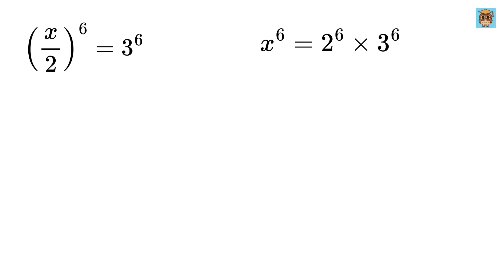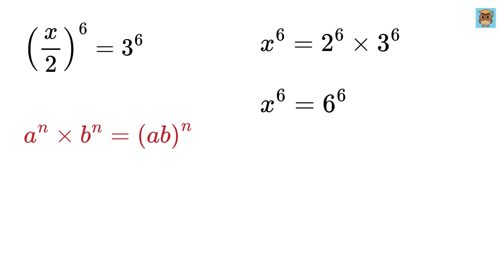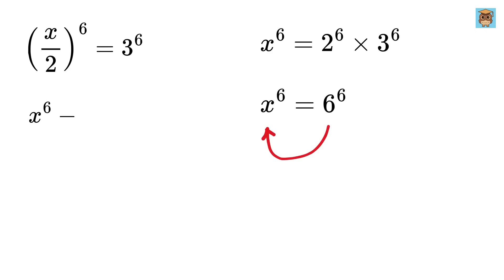Next, we will use another exponent rule: a raised to the power n multiplied by b raised to the power n equals a multiplied by b, whole raised to the power n. Applying this, 2 to the 6 multiplied by 3 to the 6 is the same as 2 times 3, raised to the power 6, or 6 to the power 6. Taking this to the left-hand side gives us x raised to the power 6 minus 6 raised to the power 6 equals 0.